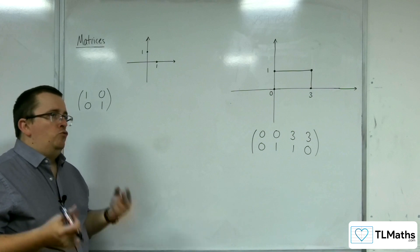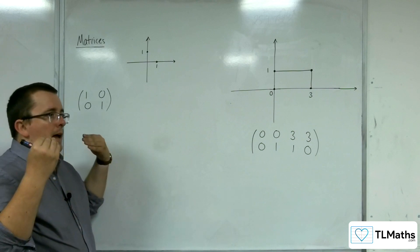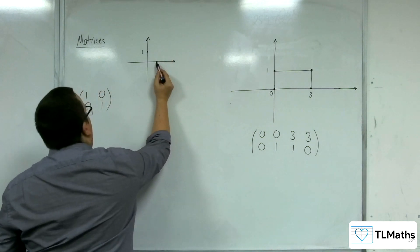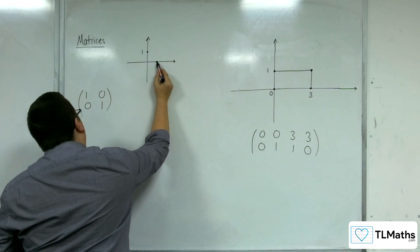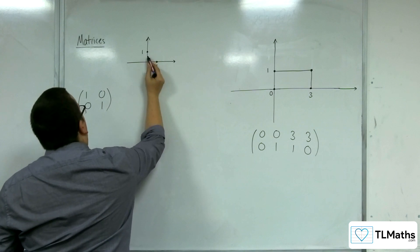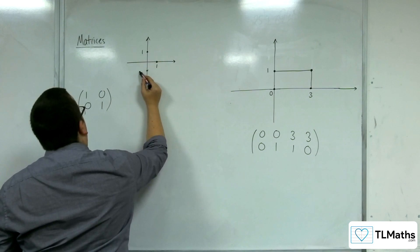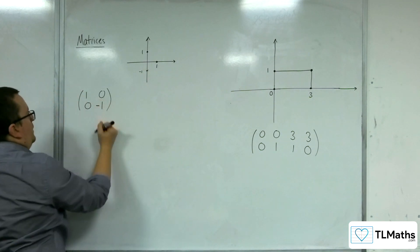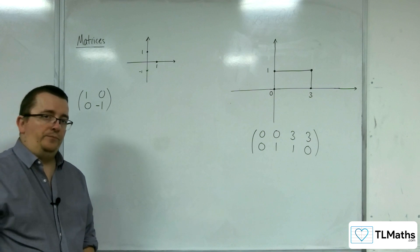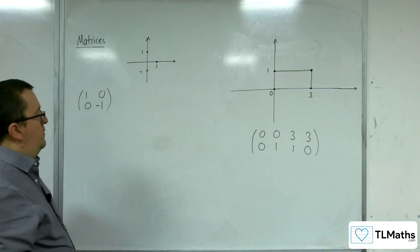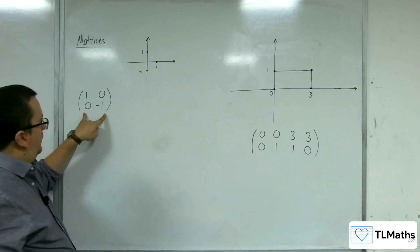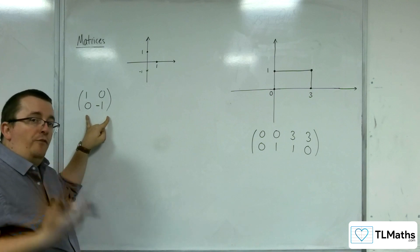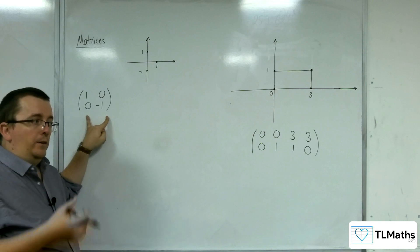If I wanted to reflect in the x-axis, what would happen is that the point (1, 0) would remain the same, but the point (0, 1) would reflect down and would become (0, -1). So the question then is: is this the matrix that represents a reflection in the x-axis?